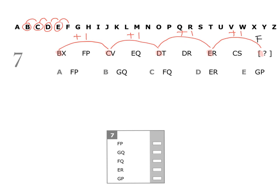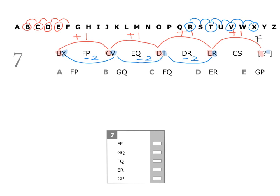Now let's look at the second letters in each pair: X, V, T, and R. To get from X to V, we move back two letters. From V to T, we move back two letters. From T to R, we move back two letters. So we're moving back two letters each time. Moving back two letters from R gives us the letter P. So that's our second missing letter in the pair.